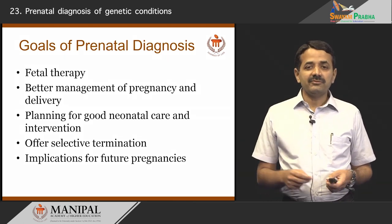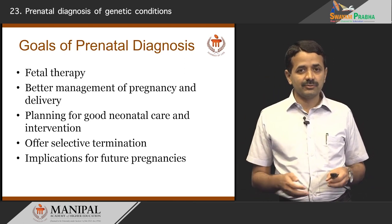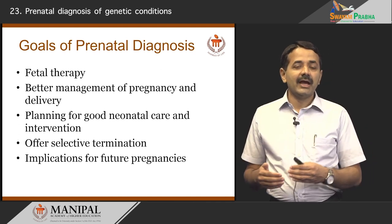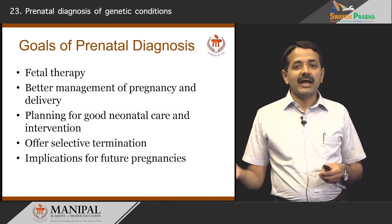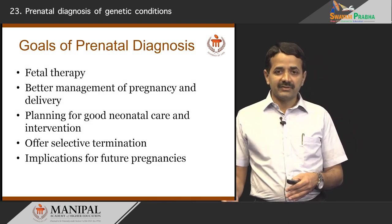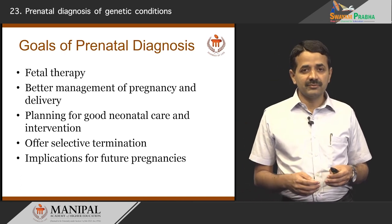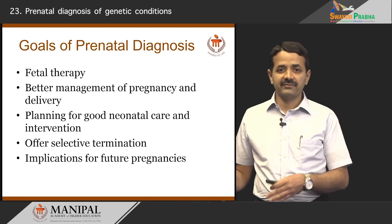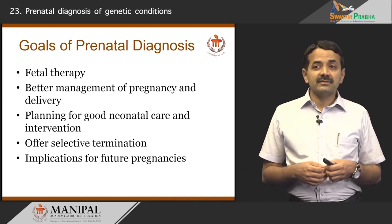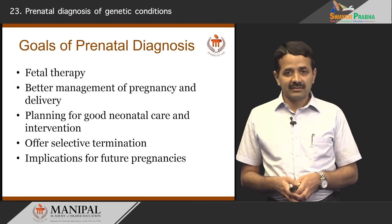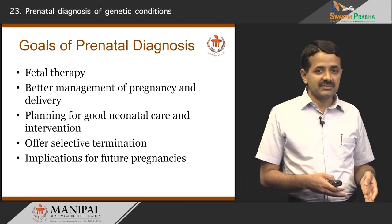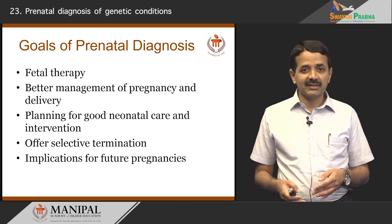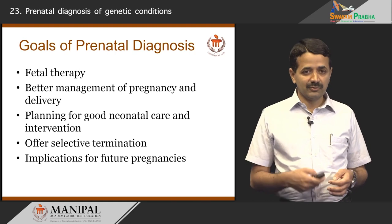The second goal is better management of pregnancy and delivery. You can take the mother to a good tertiary care center for delivery, manage the pregnancy better, and have the baby treated immediately after birth. That is one of the advantages of knowing that a baby is going to be delivered with a genetic disorder or a birth defect. For conditions like congenital diaphragmatic hernia, we need a good pediatric surgeon and neonatal care where surgery can be done, improving outcomes.